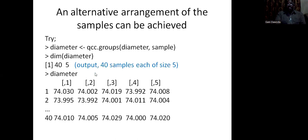Now, this is another output for the data. You could use qcc.groups to group diameter in form of samples. It will give you 40 samples indeed, each of which is having five readings. Mind it, 40 times 5 is 200.